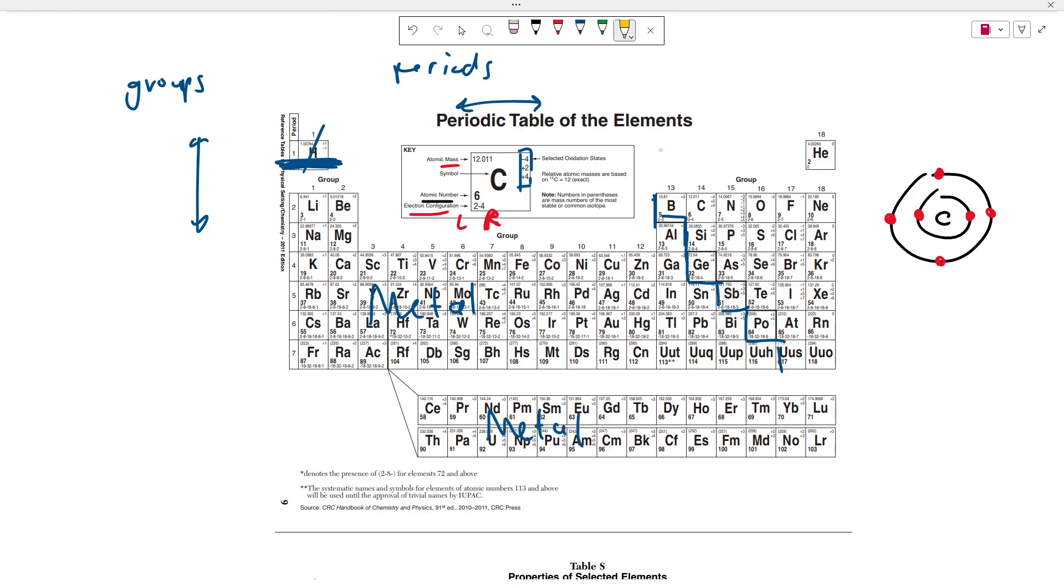Anything that is to the right of the line that I'm drawing right now is what we're going to call a non-metal. They have the opposite properties of metals. And anything between these two lines is what we're going to call a metalloid. They have both metallic and non-metal properties. And that's everything you need to know about the periodic table of elements.